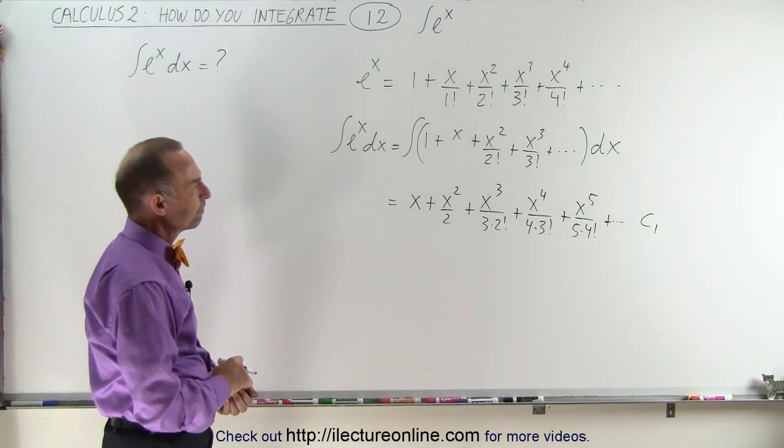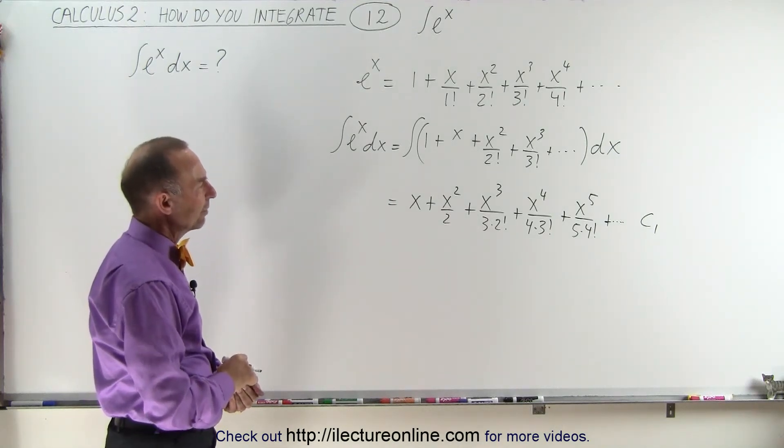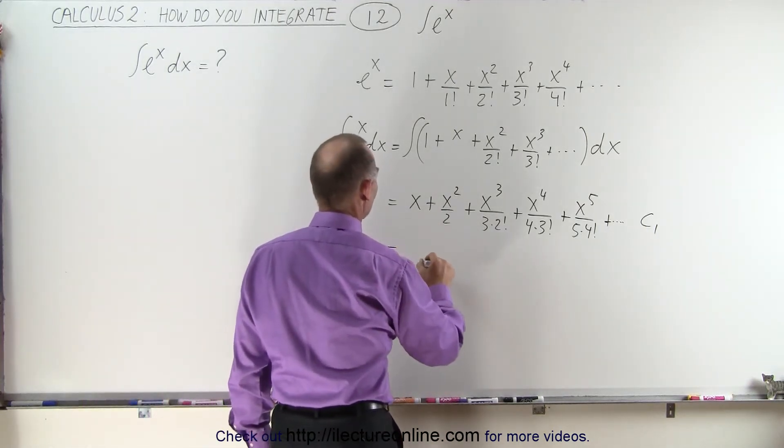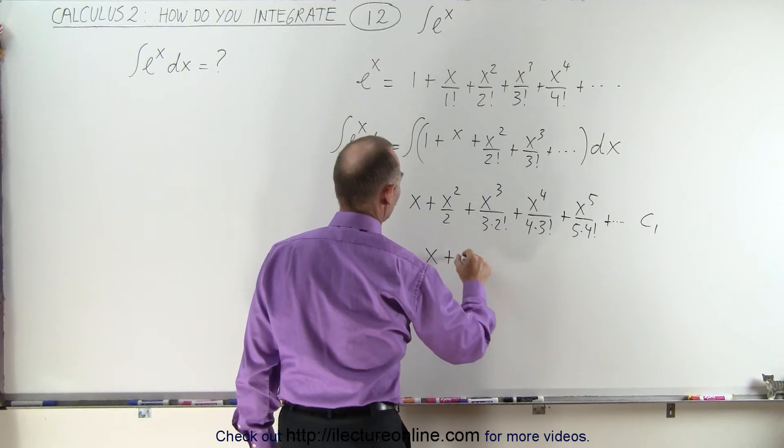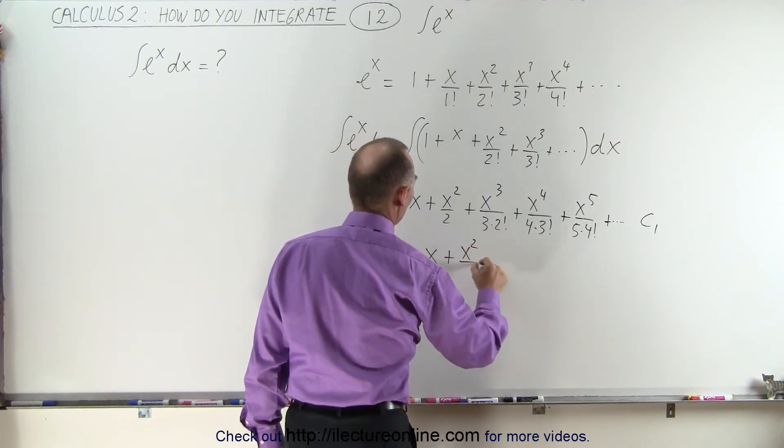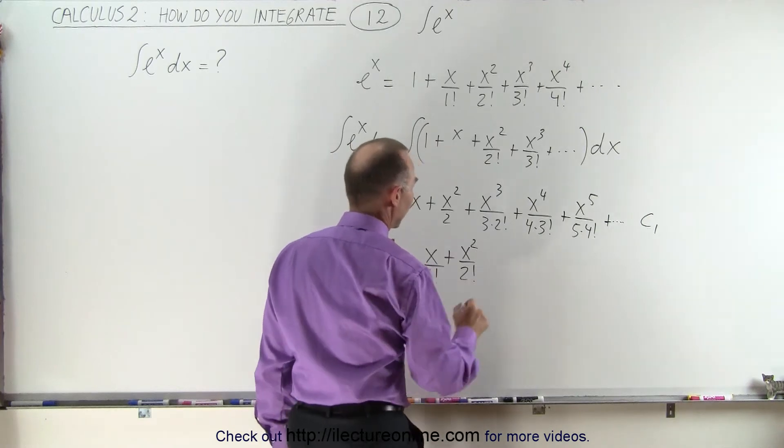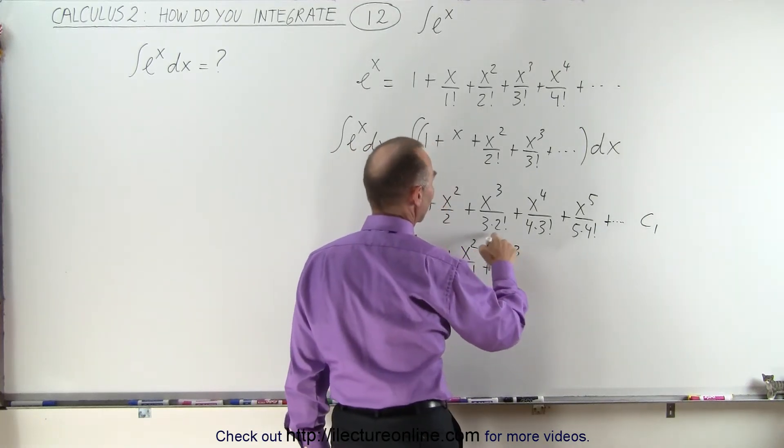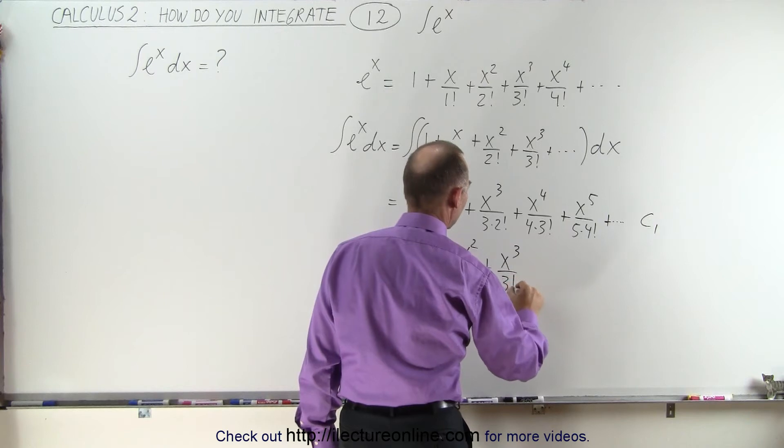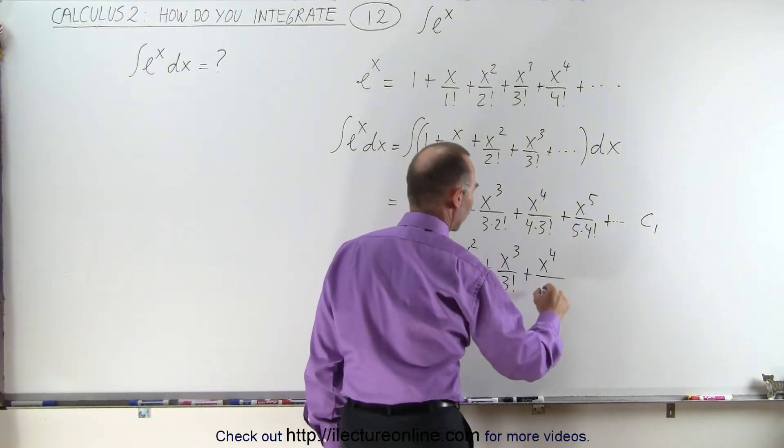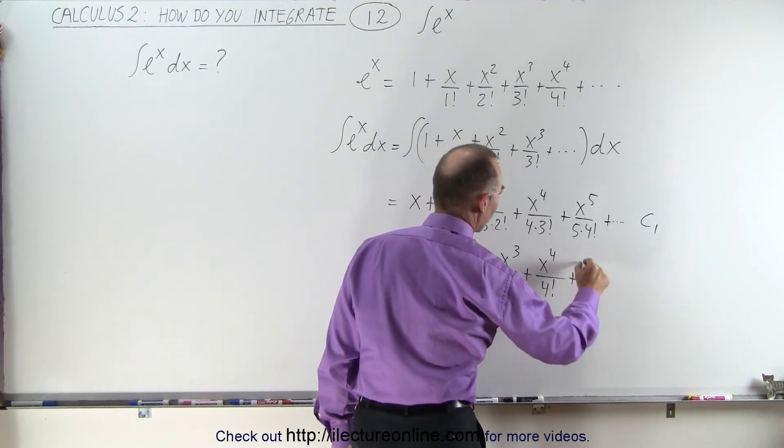Now we can simplify that somewhat. We can write this as x plus x squared over 2 factorial, and I can write x over 1 factorial. This would be plus x cubed over 3 factorial, plus x to the 4th over 4 factorial, plus x to the 5th over 5 factorial, and so forth.